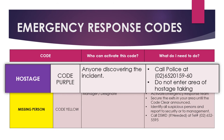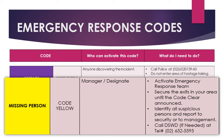Code Purple: Hostage. Who can activate this code? Anyone discovering the incident. What do I need to do? Call police at 6520-159-260. Do not enter the area of hostage taking. Code Yellow: Missing person. Who can activate this code? Manager or designate. What do I need to do? Activate the emergency response team. Secure the exits in your area until the code clear is announced. Identify all suspicious persons and report to security or management.